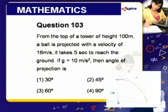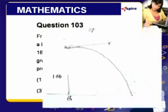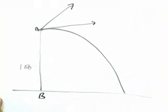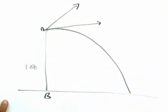Let theta be the angle of projection. AB is the tower whose height is 100 meters, that is given, and it takes 5 seconds to reach the ground. G is given to be 10 meters per second squared.